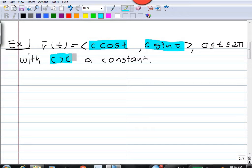Here c is a constant and t varies from 0 to 2π. So we want to know what does the curve look like,